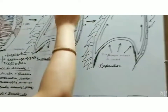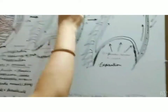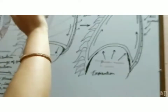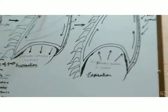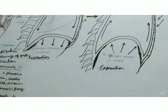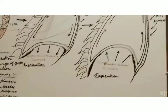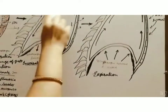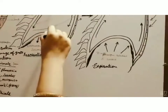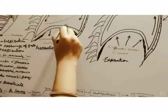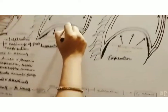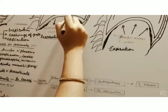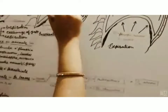The air enters through the nostrils, passes through the nasal passage, and is then conveyed through the trachea into the lungs, where it feeds into the alveolar sacs.